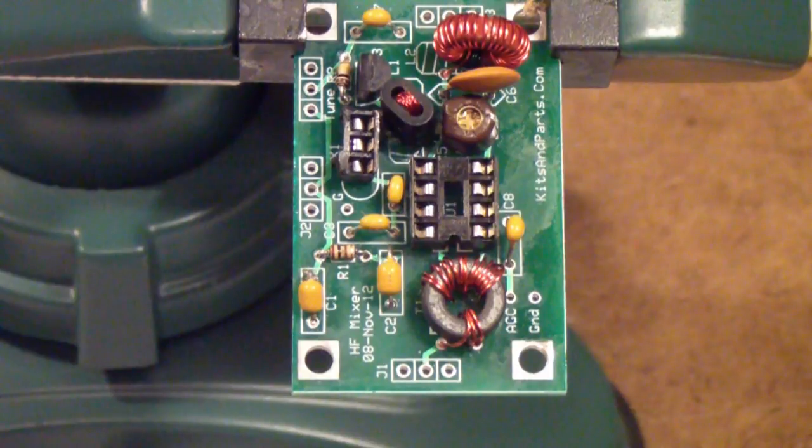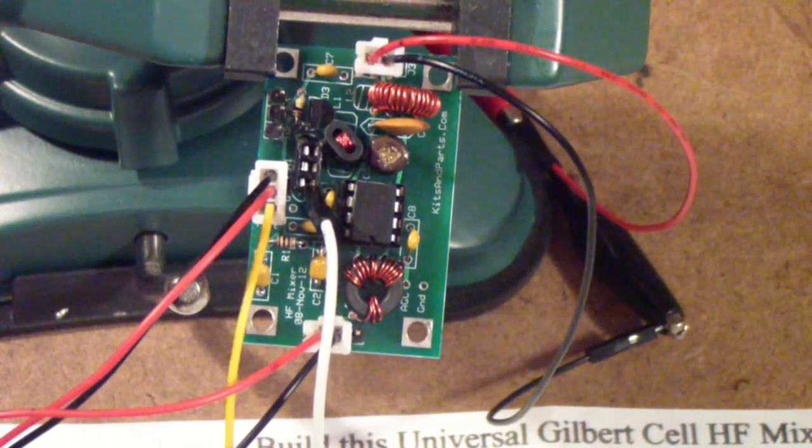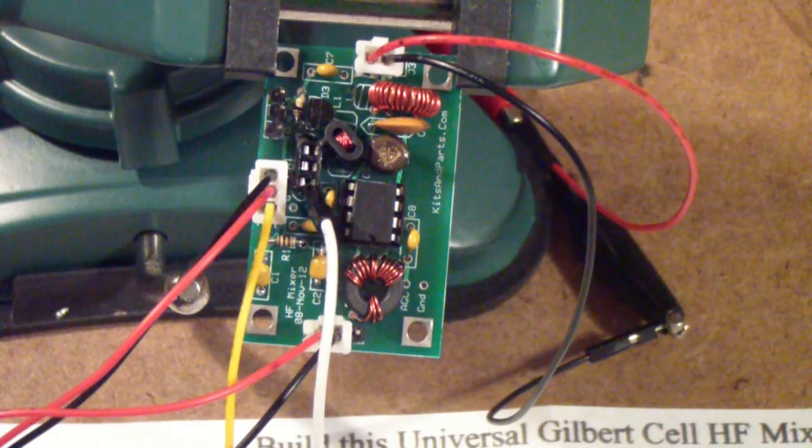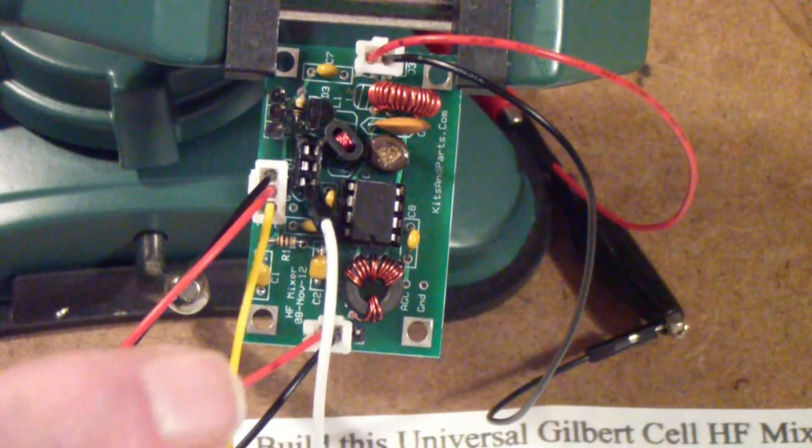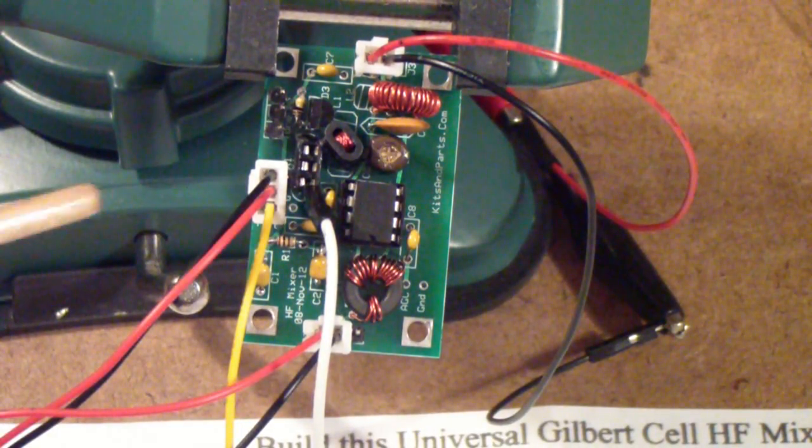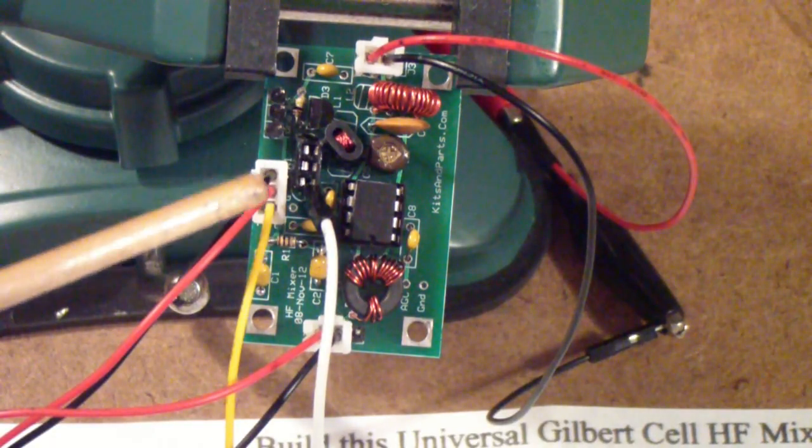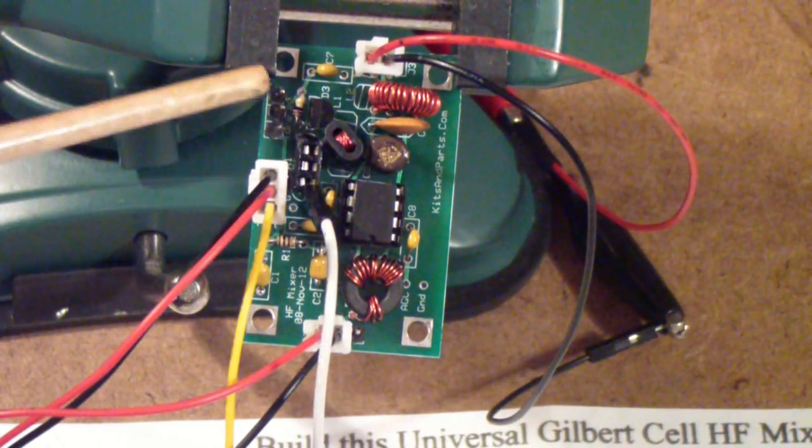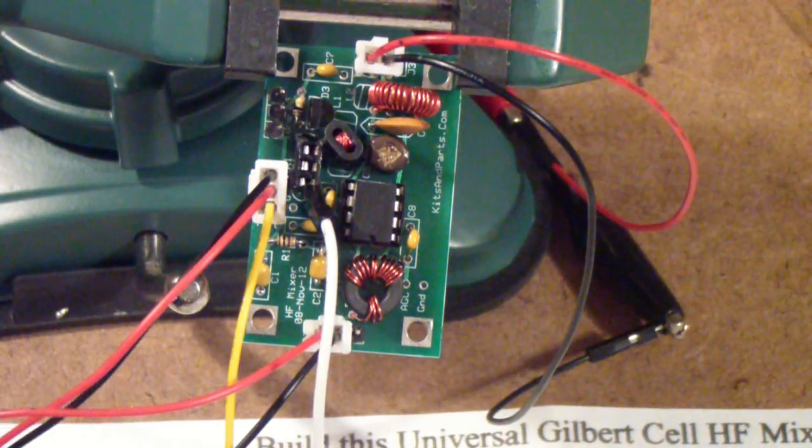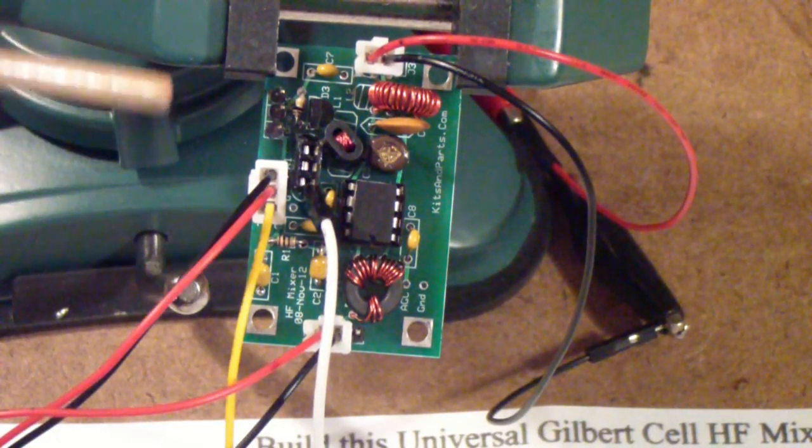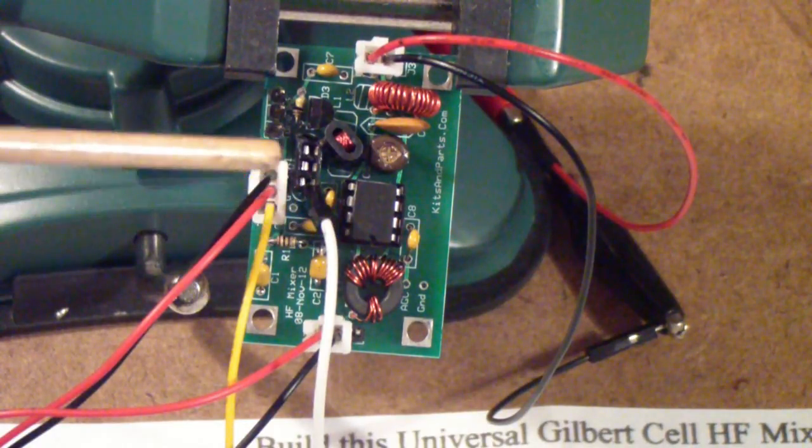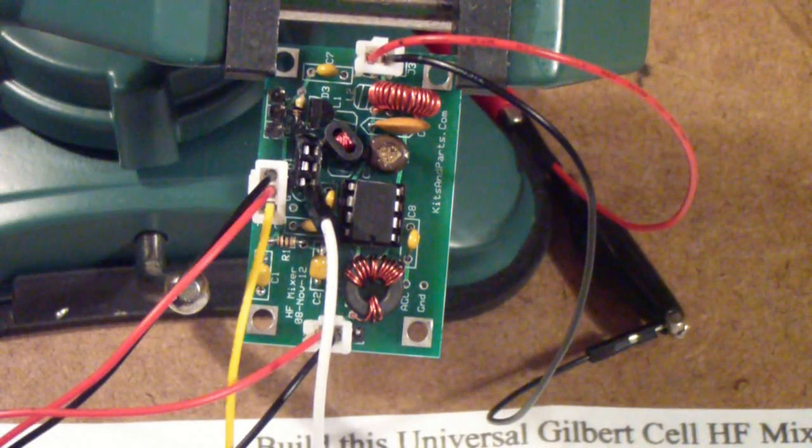I finished assembling the Gilbert cell mixer and I have removed the crystal. One of the reasons I used a socket was so that I could use external oscillator inputs instead of depending on the crystal oscillator. The crystal oscillator is fine but it's a fixed frequency, so if you want to do some measurements over a range and you want to vary the local oscillator, you'd either have to buy a bunch of different crystals or do this—that is, use an external oscillator, which is what I'm doing.